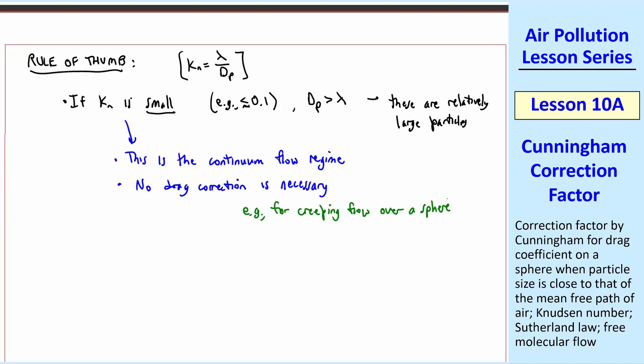For example, for creeping flow over a sphere, we showed in a previous lesson that cd was 24 over Reynolds number, so this is valid for small Knudsen number. If Kn is not small, in other words, when dp is approximately the same order of magnitude as lambda, where dp is smaller than lambda, then by definition Kn is not small.